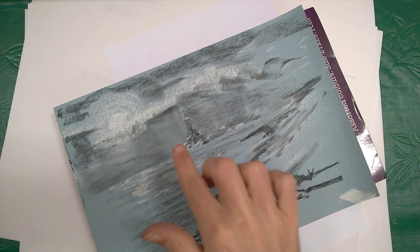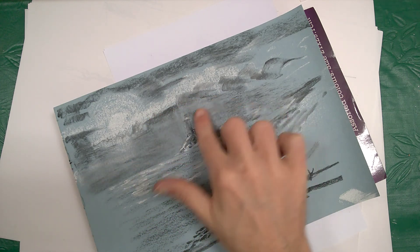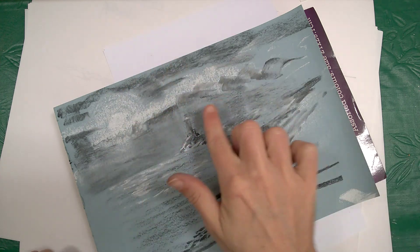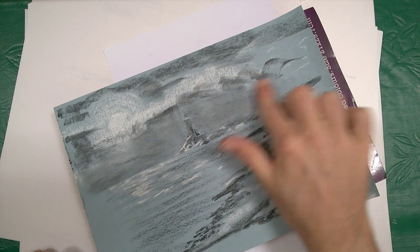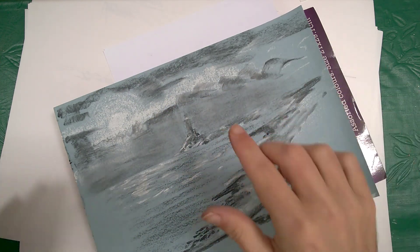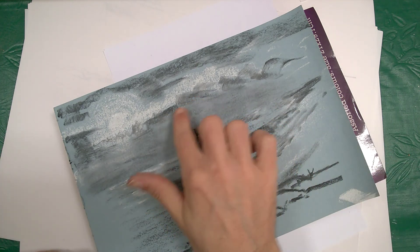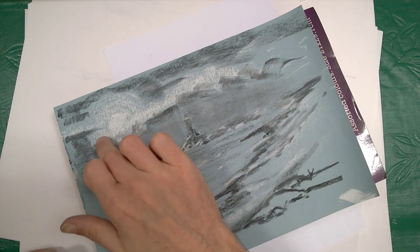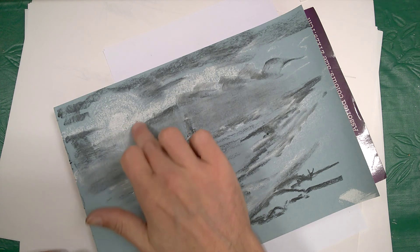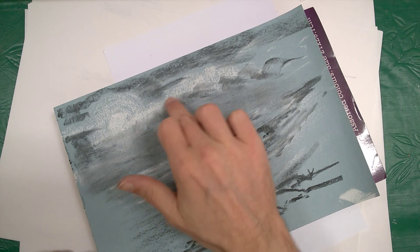Try not to smudge in different directions because then it ends up putting a texture into the sky that wouldn't be there. If it's flat, it needs to stay flat, so you need to go in the same direction. If you want the texture such as the clouds, that is when you then shape it with the finger.